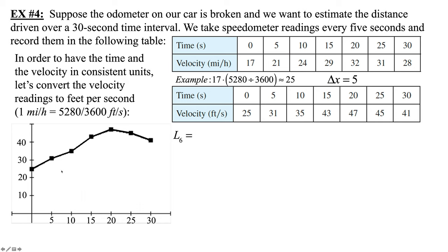So I have 1, 2, 3, 4, 5, 6 possible rectangles. So if we go with a left endpoint, that's what capital L stands for again. Left endpoint would be when T is 0, and we were traveling at that particular time, 17 miles per hour that we converted to 25 feet per second. Draw that straight across, then straight down. There's our rectangle. So that's going to be base 5 times the height of 25. That's the first upper left-hand corner.